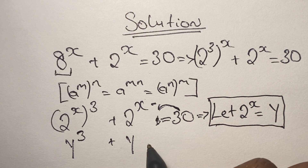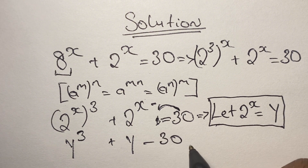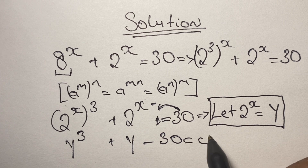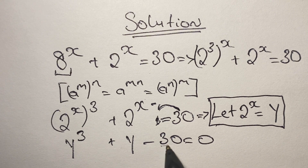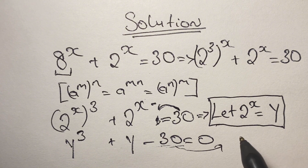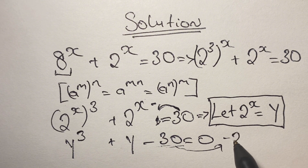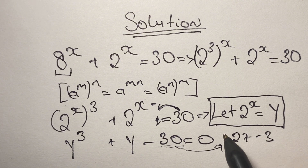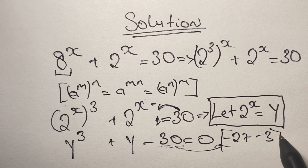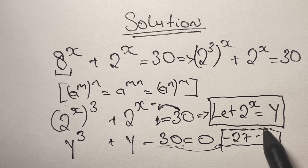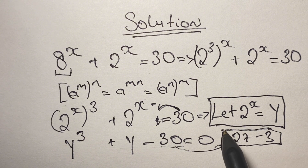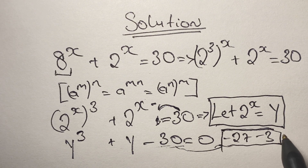We bring 30 over to the left side of the equation, so we have minus 30 equal to 0. We can rewrite 30 as negative of negative 27 minus 3, since negative 27 minus 3 is also negative 30. We'll be using these two numbers in our equation — you'll find out why in just a bit.